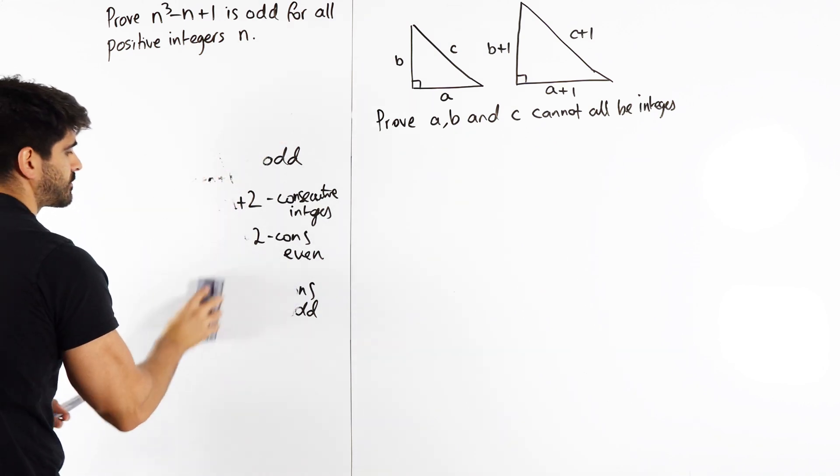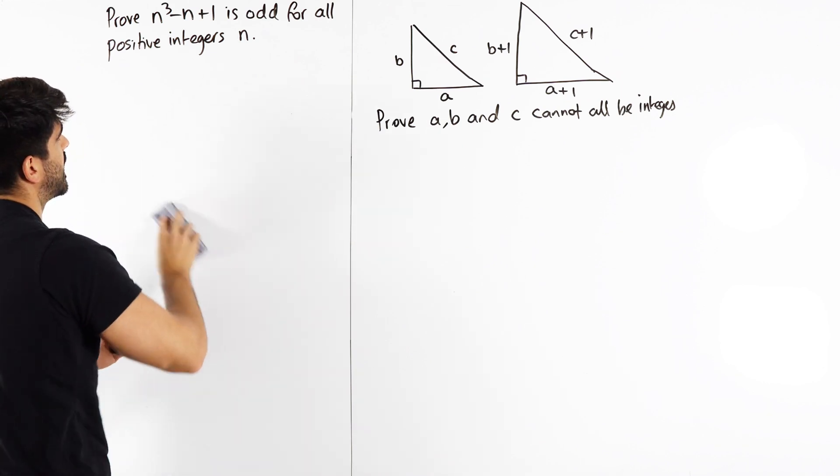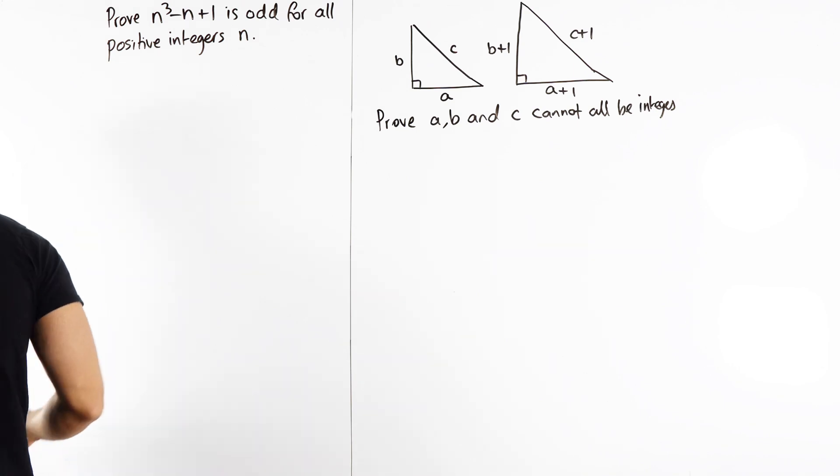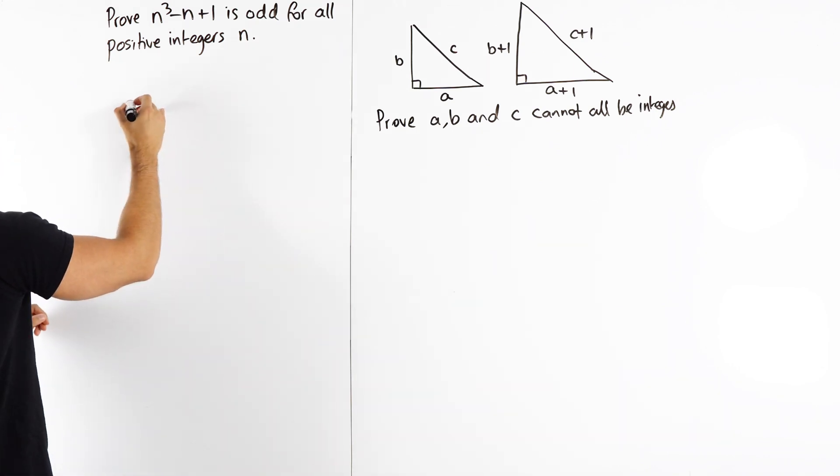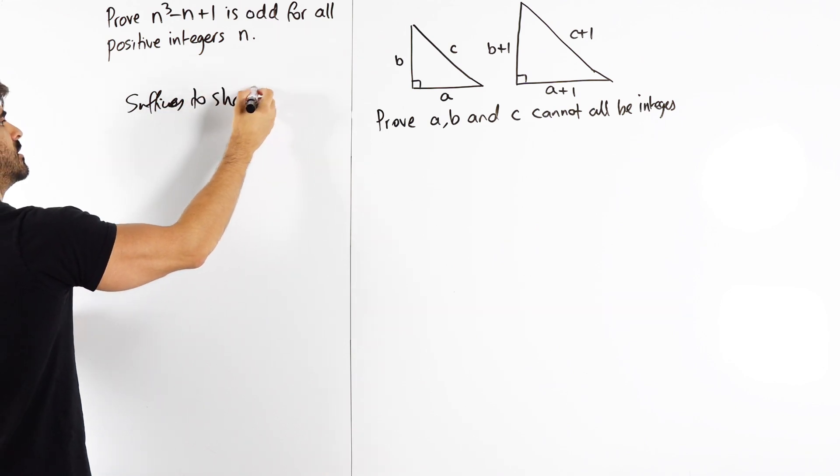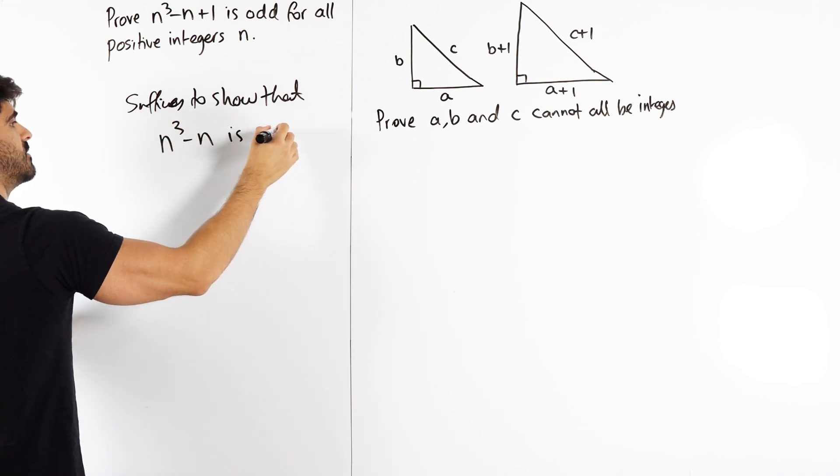So how do we do that? Well, at a very basic level you just need to look at n³ - n and say, okay, what algebraic manipulation can I do to that? So it suffices to show that n³ - n is even.